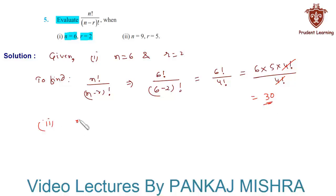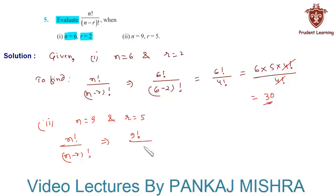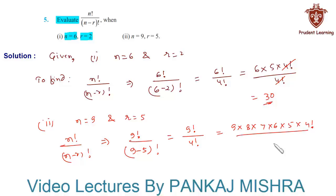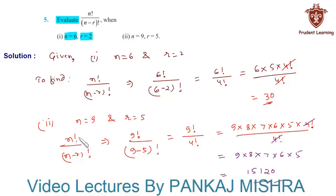In the second section, n = 9 and r = 5. We compute 9! / (9 − 5)! = 9! / 4!. Writing 9! as 9 × 8 × 7 × 6 × 5 × 4! and cancelling 4!, we are left with 9 × 8 × 7 × 6 × 5. Multiplying these numbers gives 15,120. Hence n! / (n − r)! for n = 9, r = 5 is 15,120. This completes our solution.